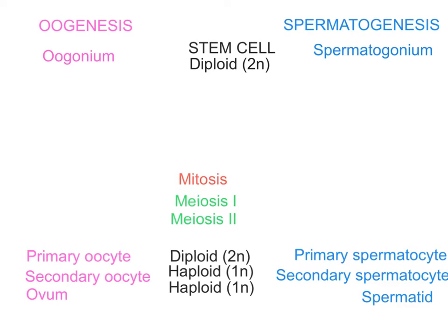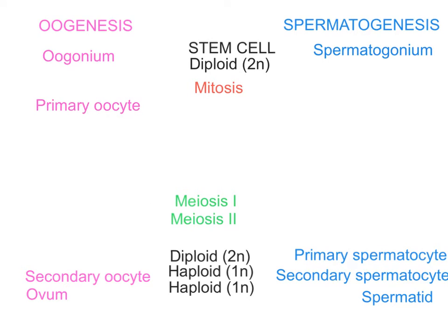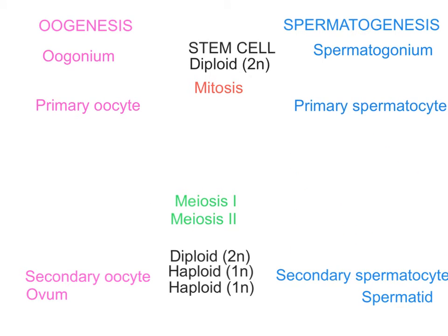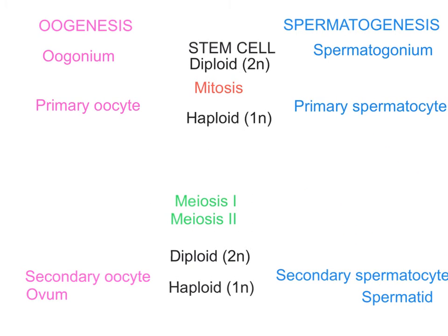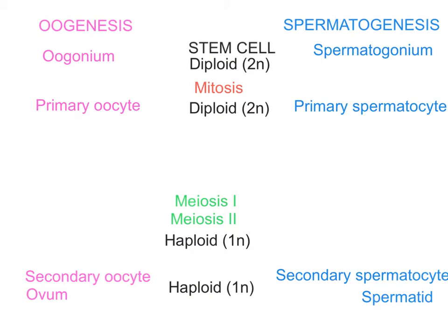These diploid stem cells then undergo mitosis to create two identical daughter cells. These cells are going to be called the primary oocyte or the primary spermatocyte. Because this is mitosis, you are also going to have diploid cells.